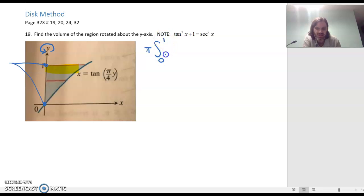We need the radius, and it comes out from the center out to the line tangent of pi over 4y. Remember that's our radius, so we're going to square that. It's tangent squared of pi over 4y, and that'll be in terms of dy.